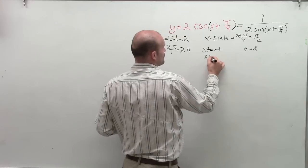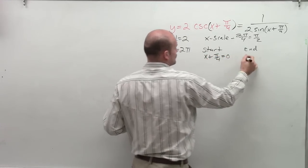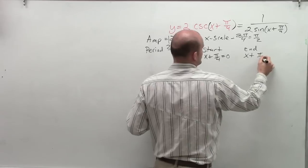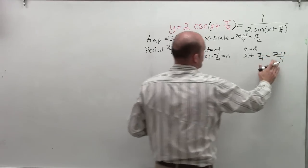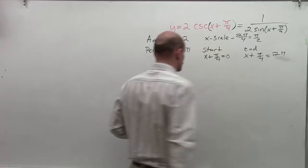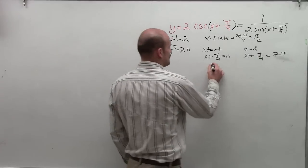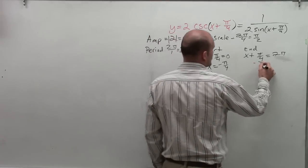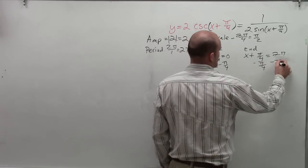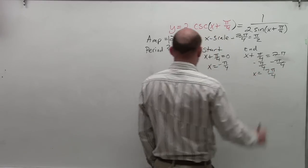So what we're going to do is I'm going to take my function, or what I'm taking inside my function, and I'm going to set that equal to 0. And I'm going to set inside my function equal to 2 pi. OK. So now, to go ahead and find the start and end, I'm going to solve for x. So I have x equals negative pi over 4, and subtract, and I get x equals 7 pi over 4.